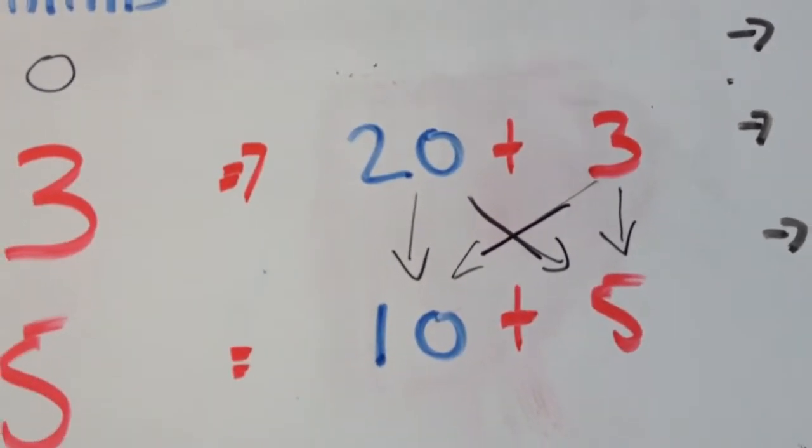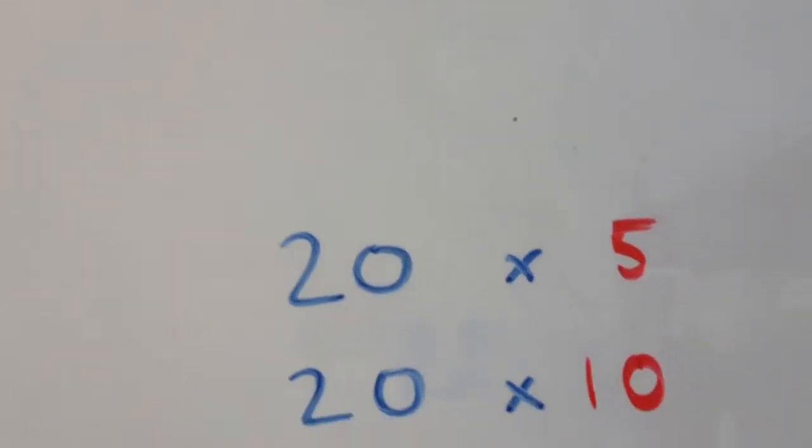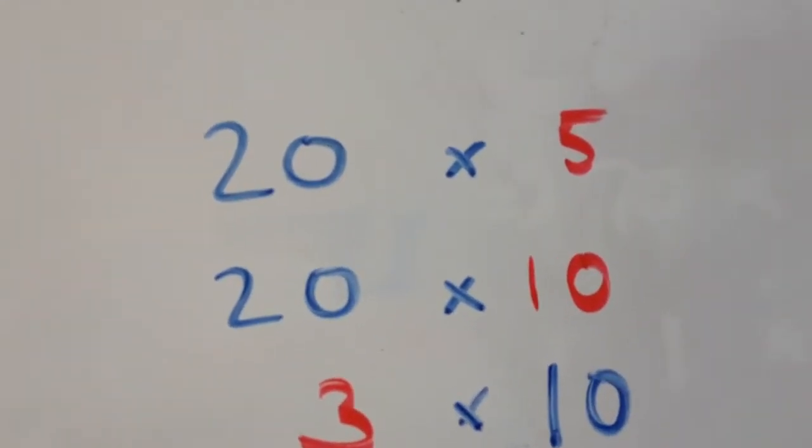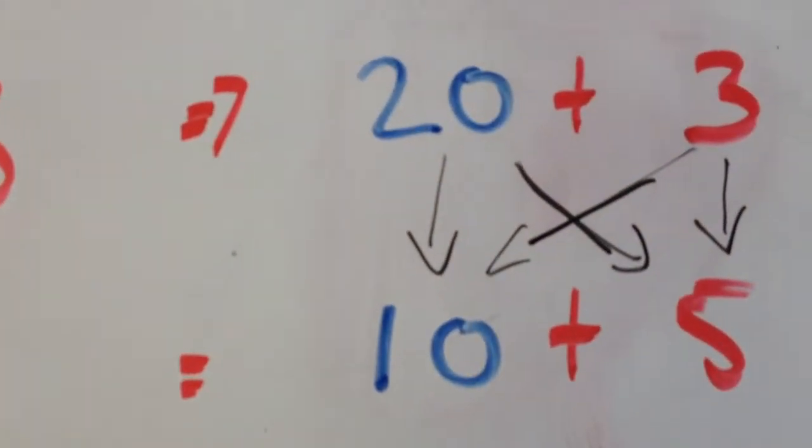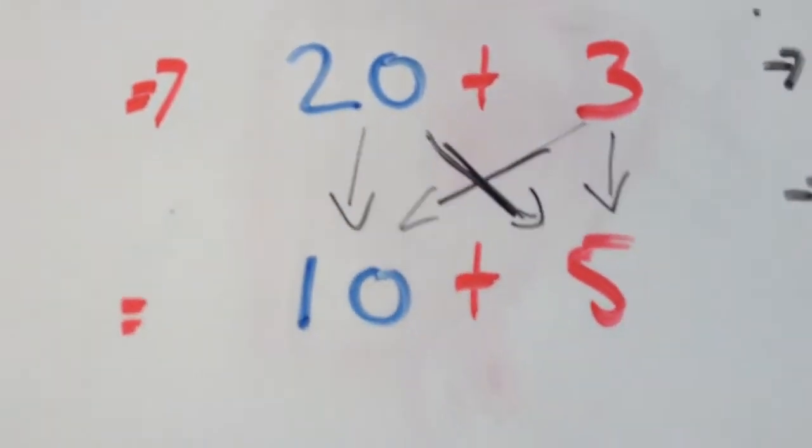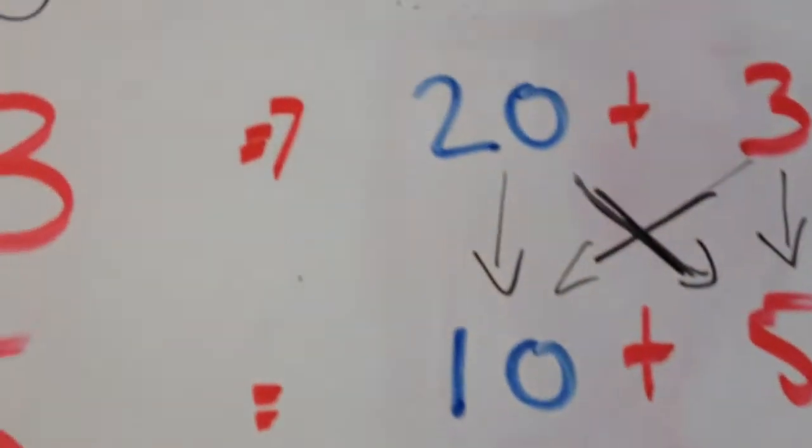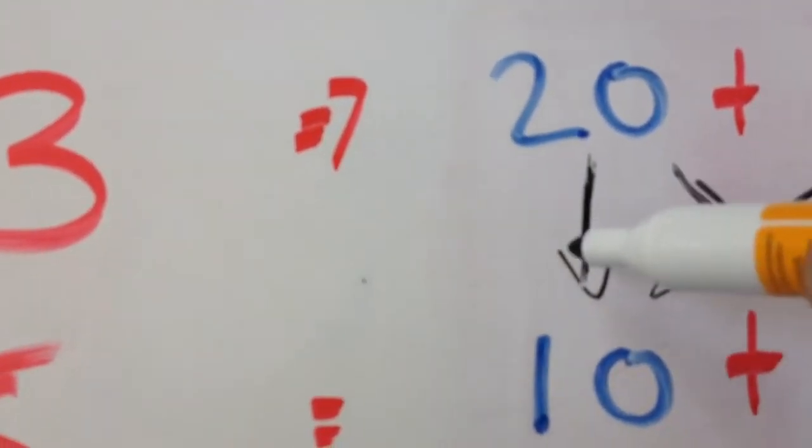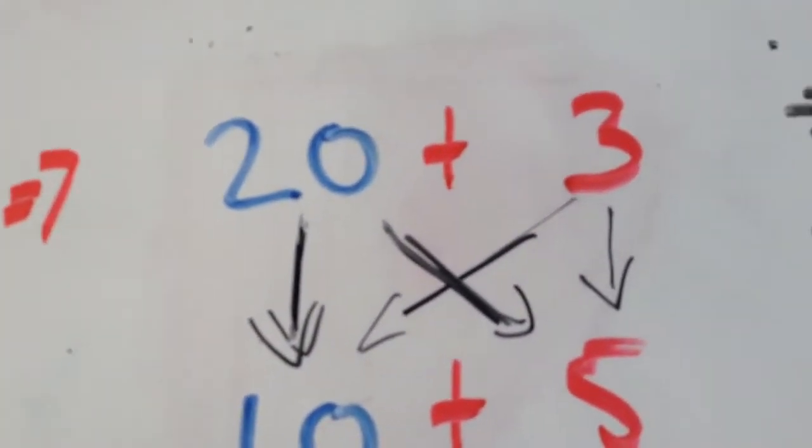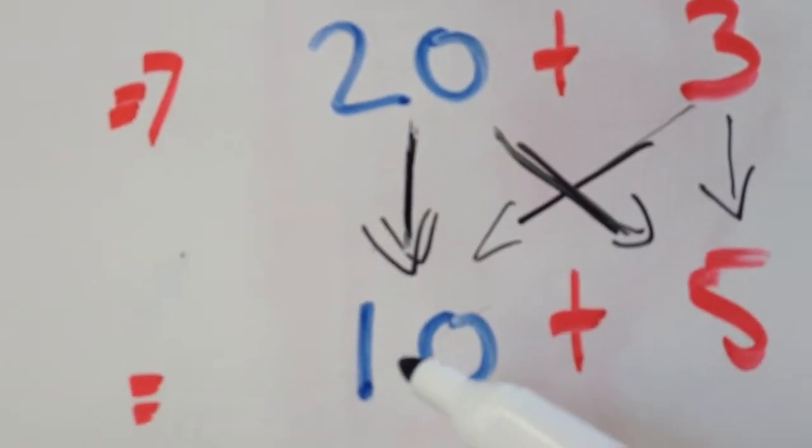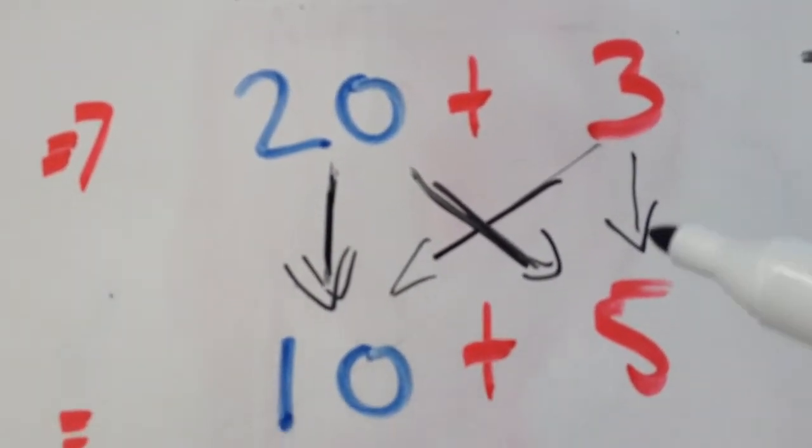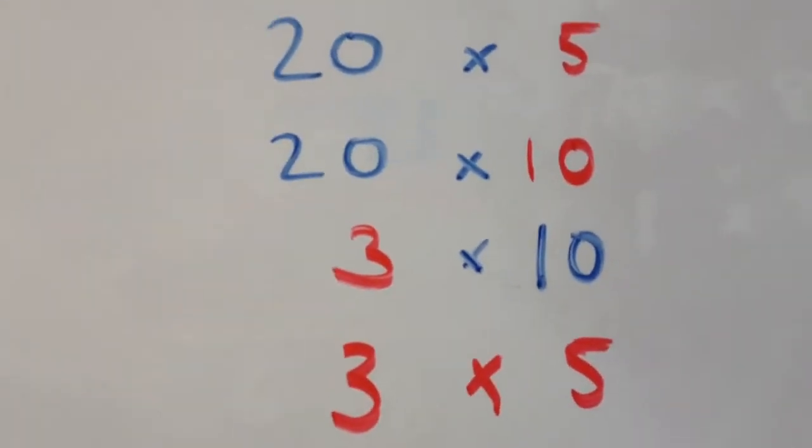So here's a breakdown of that. The calculation is going to be 20 times 5, so that's this one here. Plus we're going to have 20 times 10, which is this one down here. We're going to have 3 times 10, and we're also going to have 3 times 5. So that's all the four calculations down here: 20 times 5, 20 times 10, 3 times 10, and 3 times 5.